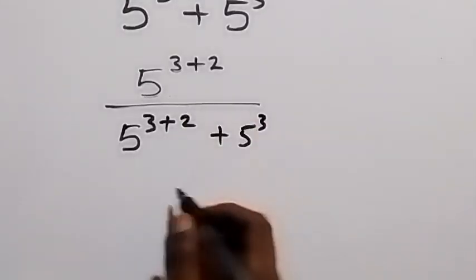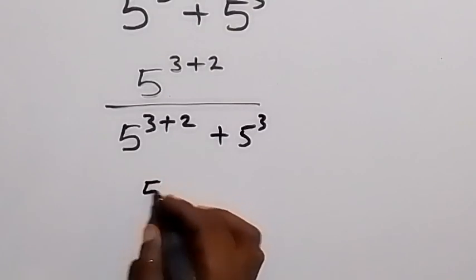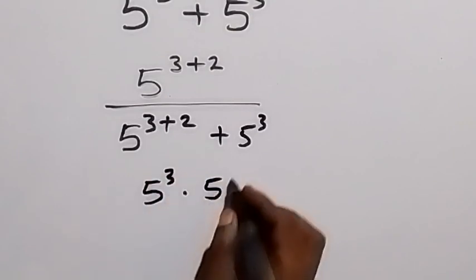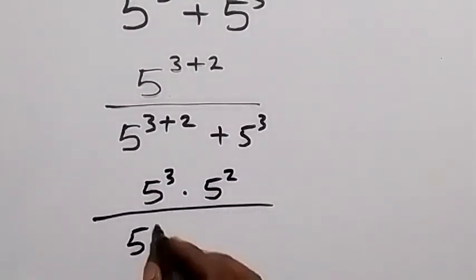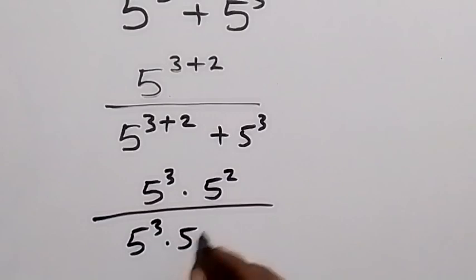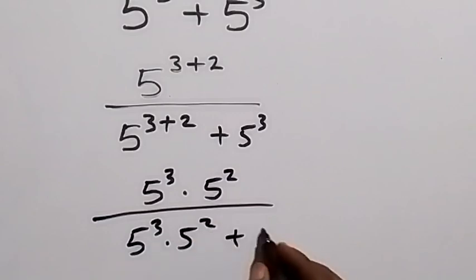This will be 5 raised to power 3 times 5 raised to power 2, then divided by also we have 5 raised to power 3 times 5 raised to power 2, then plus 5 raised to power 3.